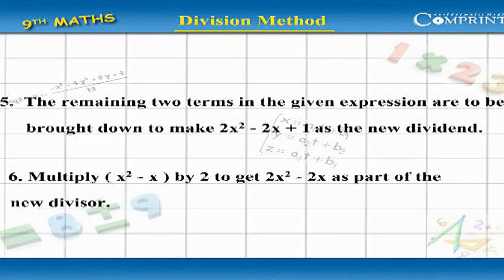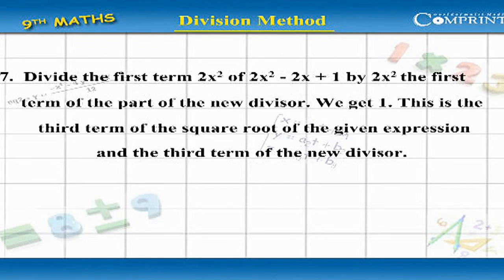Step 6: Multiply x squared minus x by 2 to get 2x squared minus 2x as part of the new divisor. Step 7: Divide the first term 2x squared of 2x squared minus 2x plus 1 by 2x squared — the first term of the part of the new divisor. We get 1. This is the third term of the square root of the given expression and the third term of the new divisor.